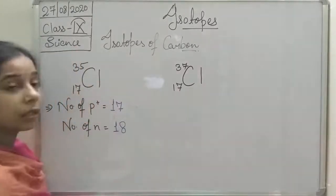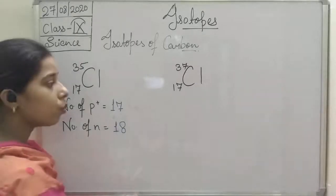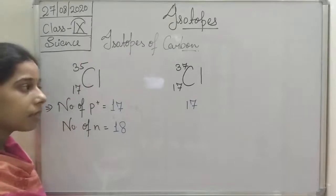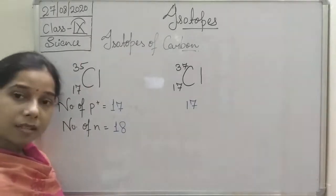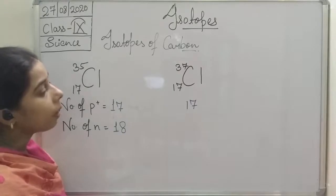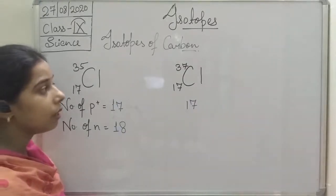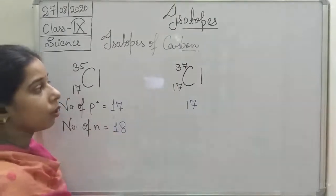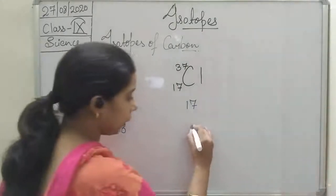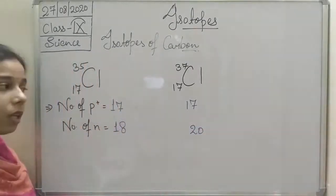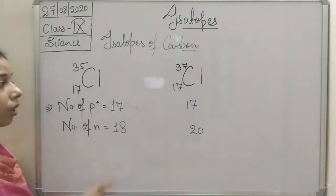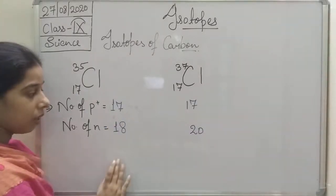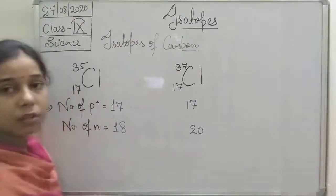For chlorine-37, there is no change in the number of protons. Atomic number remains 17, so number of protons is 17. Number of neutrons equals mass number minus atomic number: 37 minus 17 equals 20. So number of neutrons is 20. Number of protons in both cases is 17, but neutrons are 18 and 20 respectively.